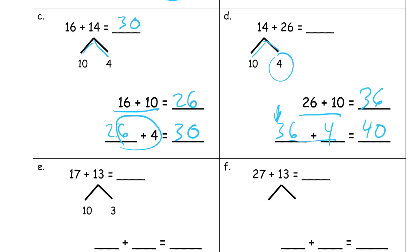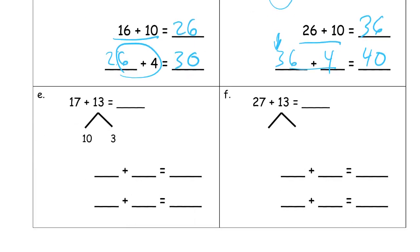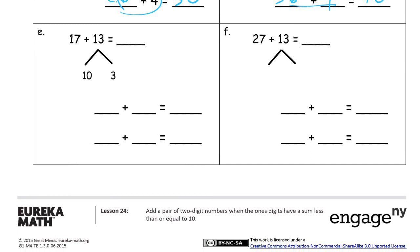You can always just count that up. 37, 38, 39, 40. But when you see those partners to 10, like you do here, 7 and 3, there they are again.